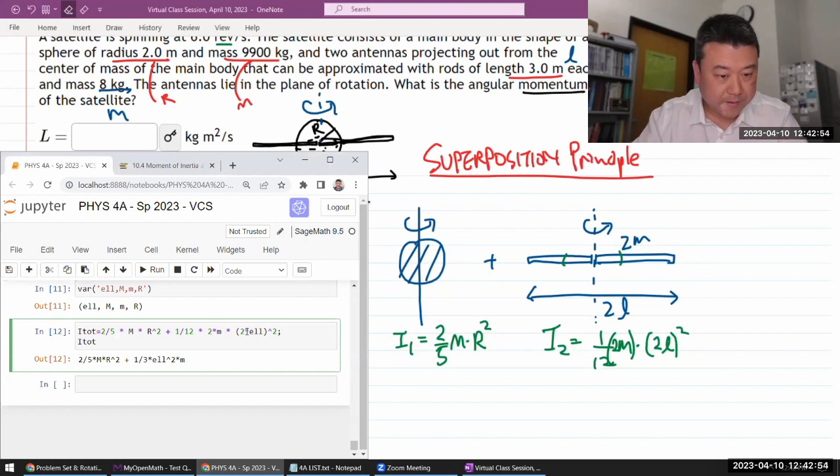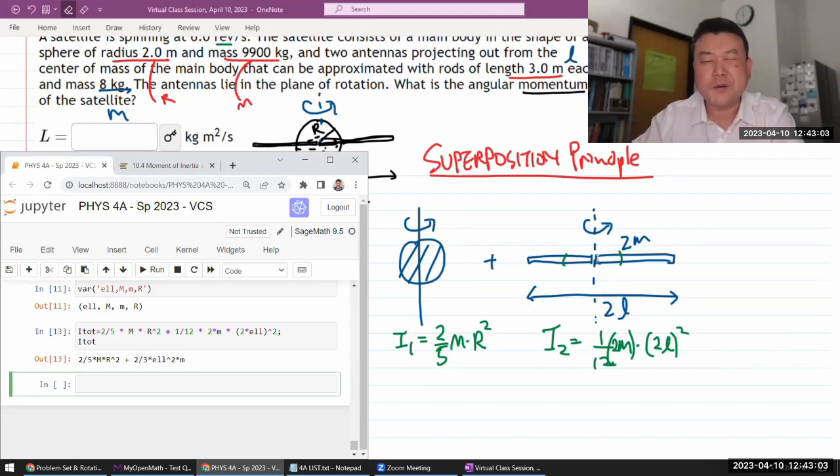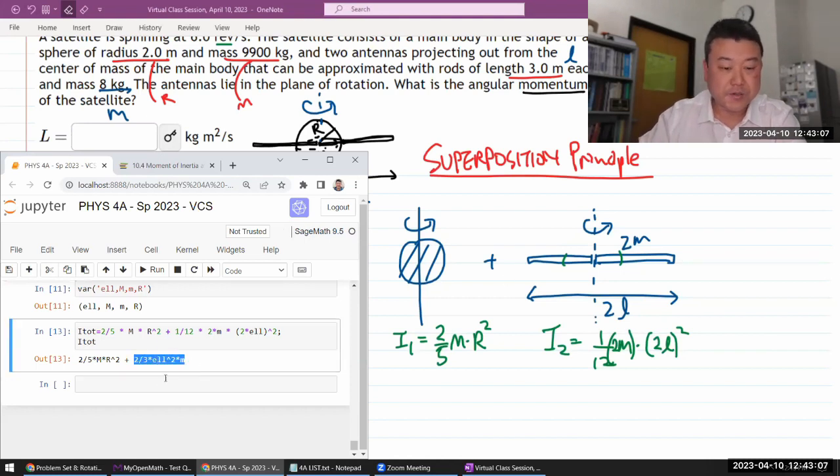So two times m. Yeah, all right. So yeah, this is kind of what you would expect if you simply took this as a rod being spun about its endpoint and then you doubled it. That's actually what this expression is.